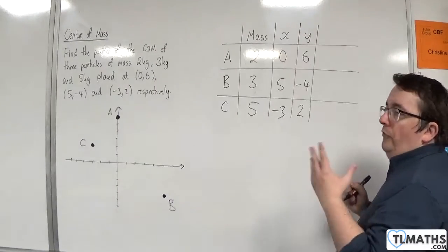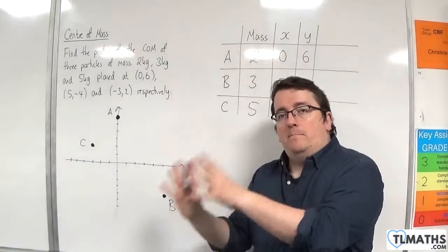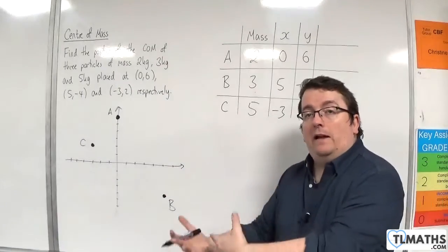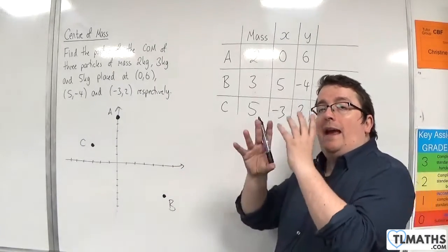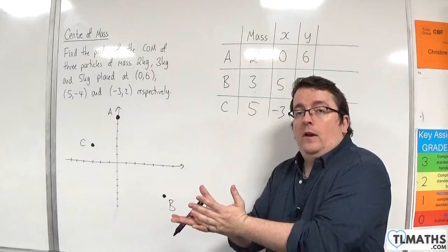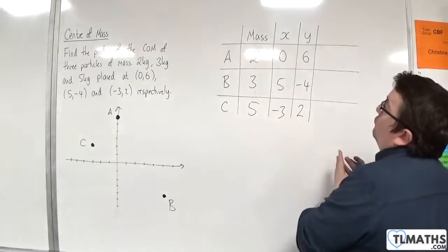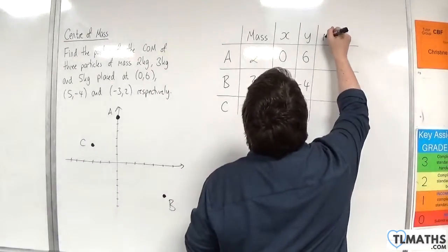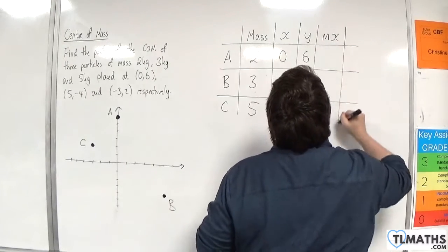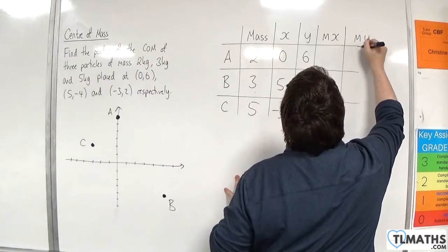And what we'll do is we'll look at the mass times x and the mass times y. So we'll get a weighted average for the x and the weighted average for the y's. And that will be the coordinates of my centre of mass. So we'll have m times x, and we'll have m times y.